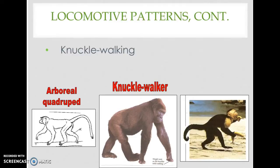Quadrupedalism is the primary form of locomotion, found both terrestrially and arboreally. More specialized forms include knuckle-walking, generally done by the largest-bodied primates — the great apes: chimpanzees, gorillas, and even orangutans when they come down to the ground. These animals have powerfully built arms slightly longer than their legs and must rest their weight on their knuckles to support their large bodies. They have prominent muscle attachments on their forelimbs and scapula — the behavior is reflected in the anatomy.